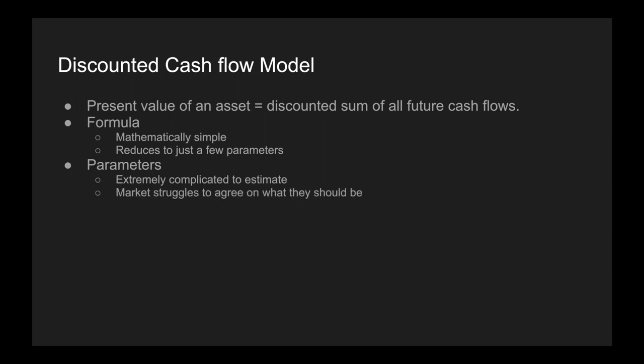This formula is mathematically very simple and reduces to just a few parameters. However, those parameters are extremely complicated to estimate, and the market struggles to agree on what they should be. This is why the price follows this jagged-tooth pattern — sometimes people think the parameters should be one thing and the price goes up, then they think it should be different and the price comes down. The discounted cash flow equals C divided by I minus G.